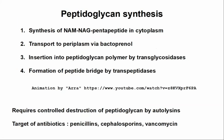They get around it by synthesizing the precursors - the repeating subunits - in the cytoplasm. So the first step is to synthesize the NAM-NAG repeating glycan part and then the pentapeptide in the cytoplasm. In the mature peptidoglycan molecule, it's a tetrapeptide - four amino acids attached to each N-acetylmuramic acid glycan. But it's synthesized first as a pentapeptide.